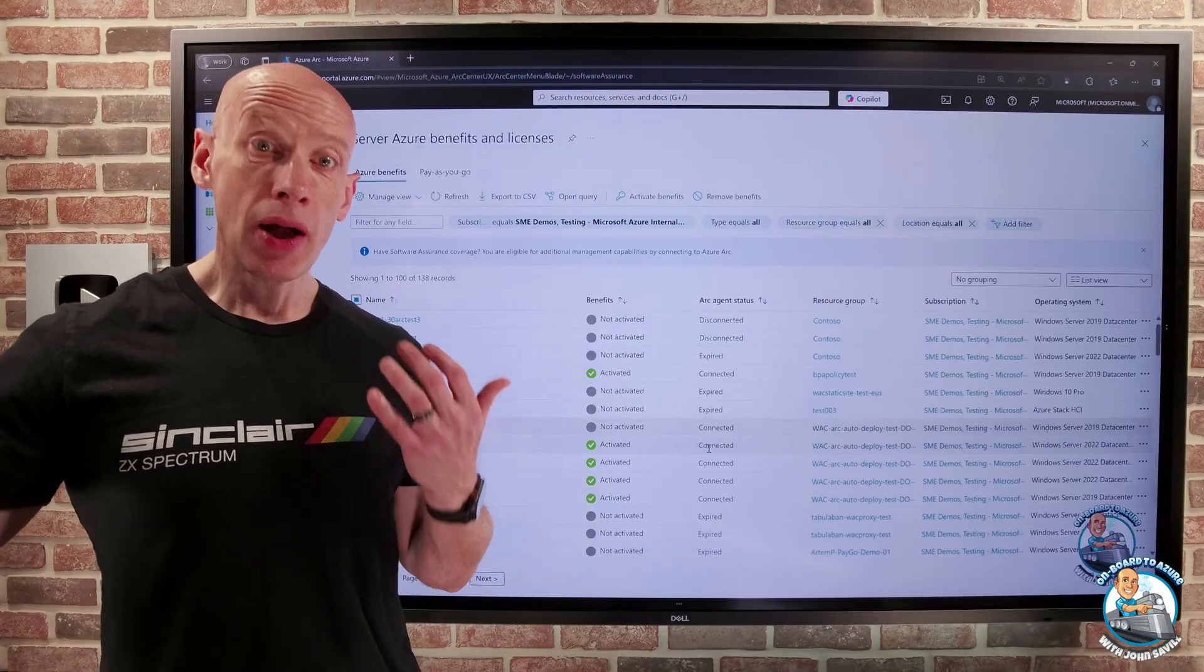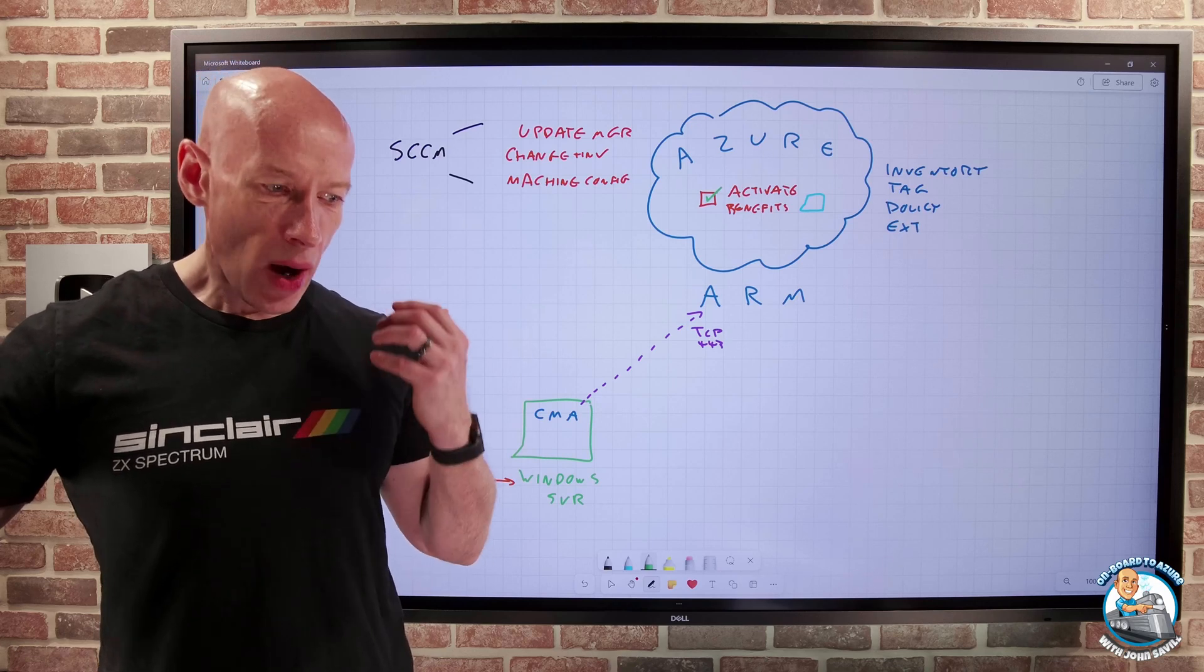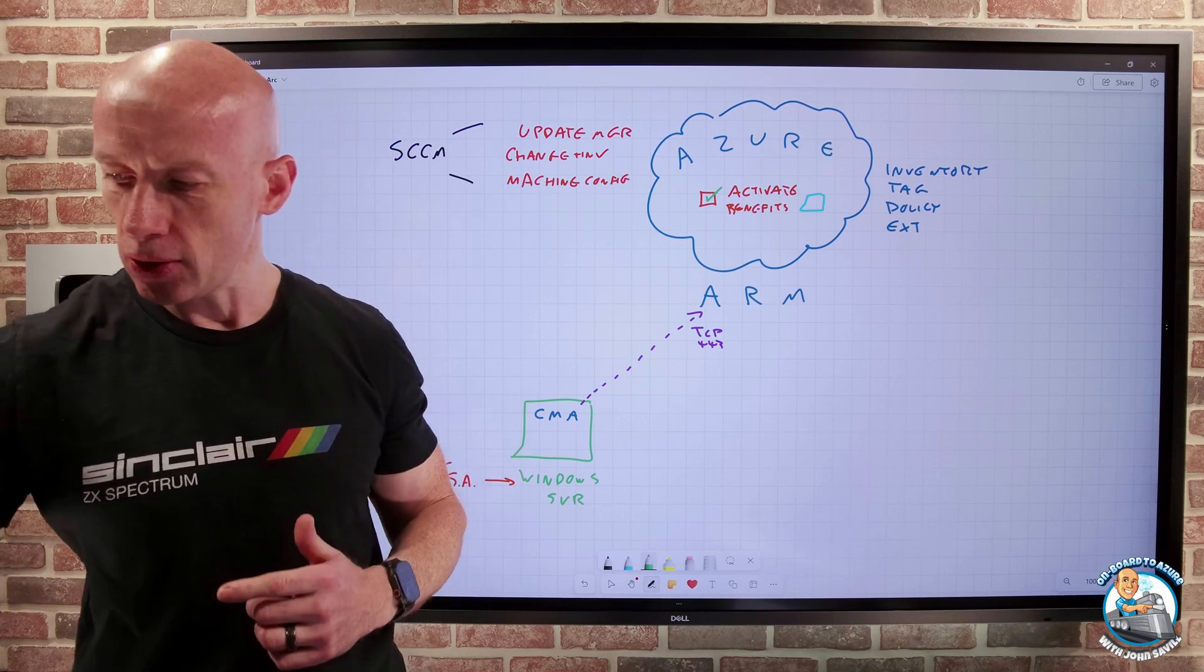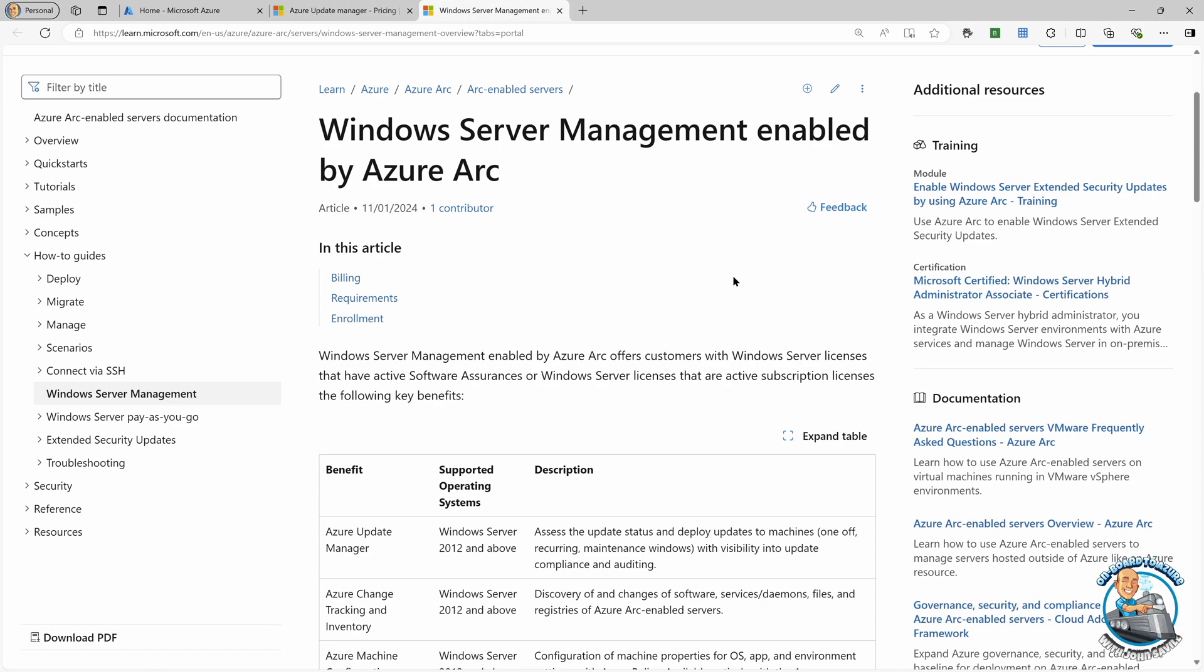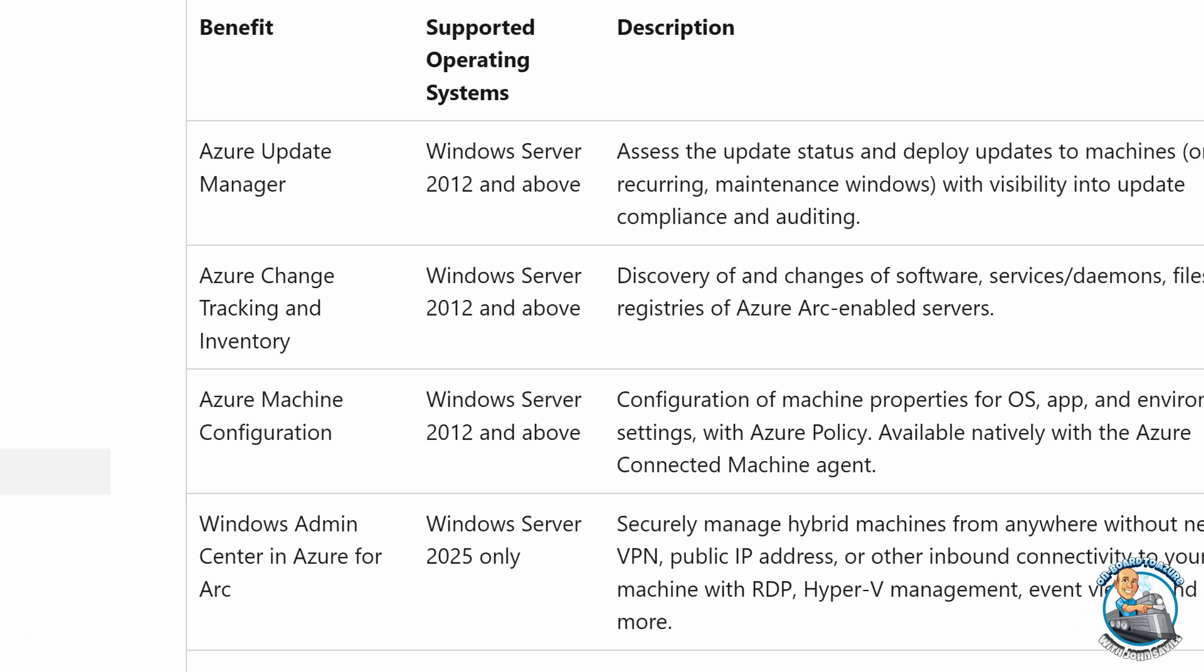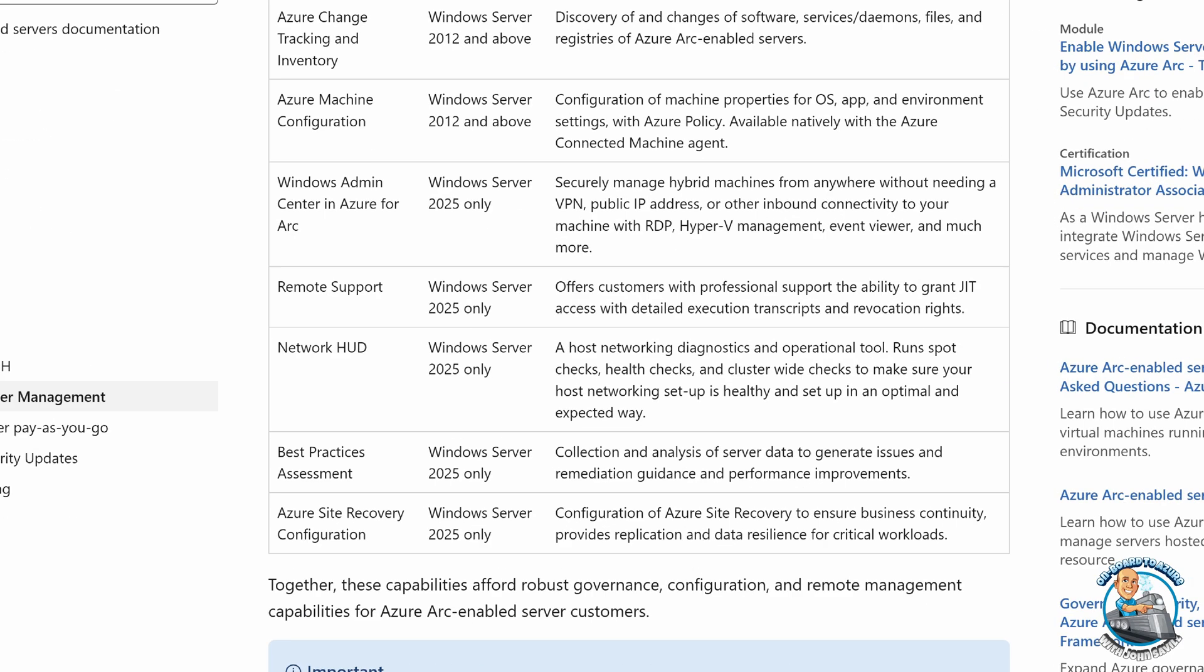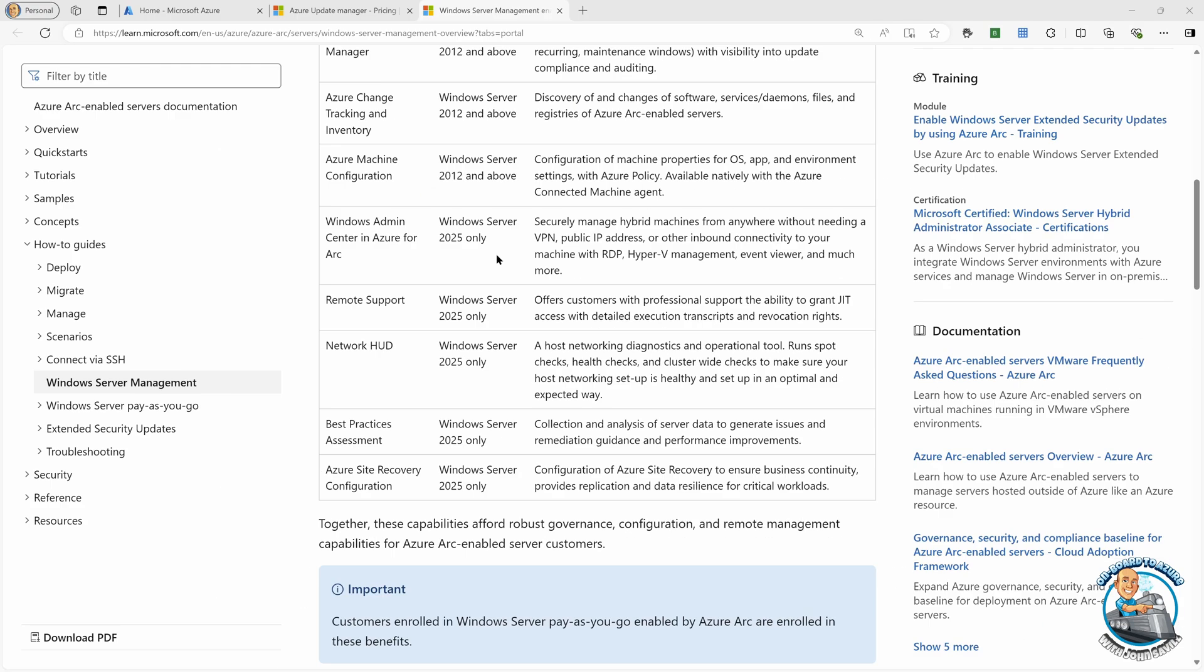So, as you can see, that was a super low barrier to actually start using that. And I talked about what is actually way more features than just the three I drew on the board and you saw those. But if we actually go and look at the documentation for a second, let's just jump back over. It goes into those details. Now, I've covered these first three. Azure Update Management, Azure Change Tracking Inventory, Azure Machine Configuration. Now, notice, these are for Windows Server 2012 and above. The rest of the capabilities today, and this, you never know, could change in the future, are for Windows Server 2025 only.